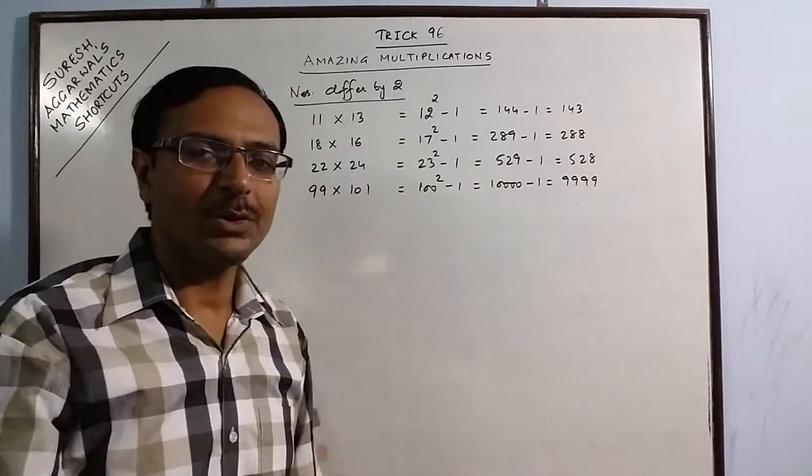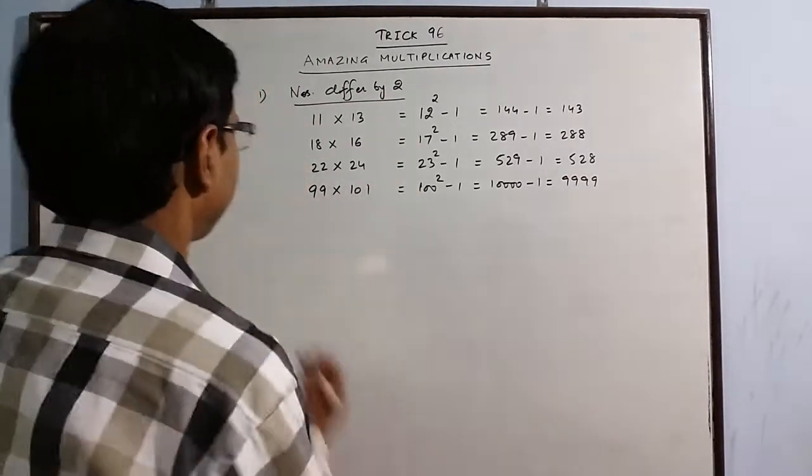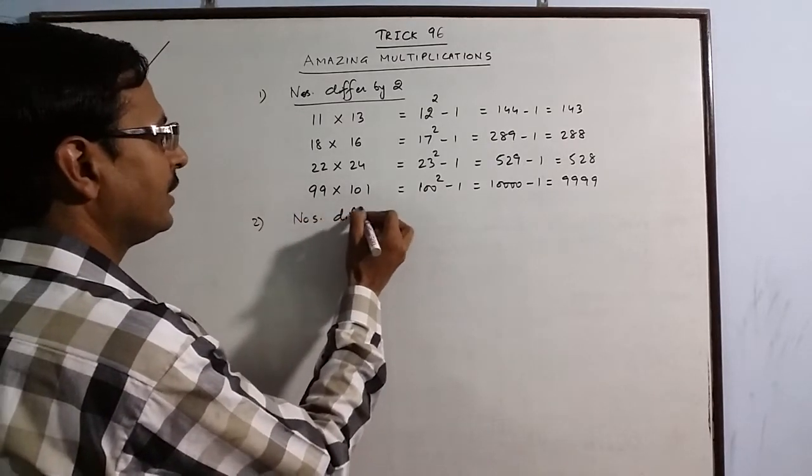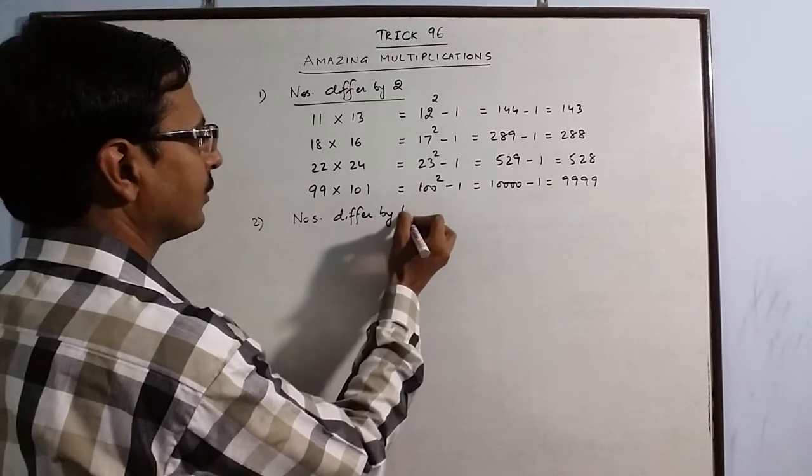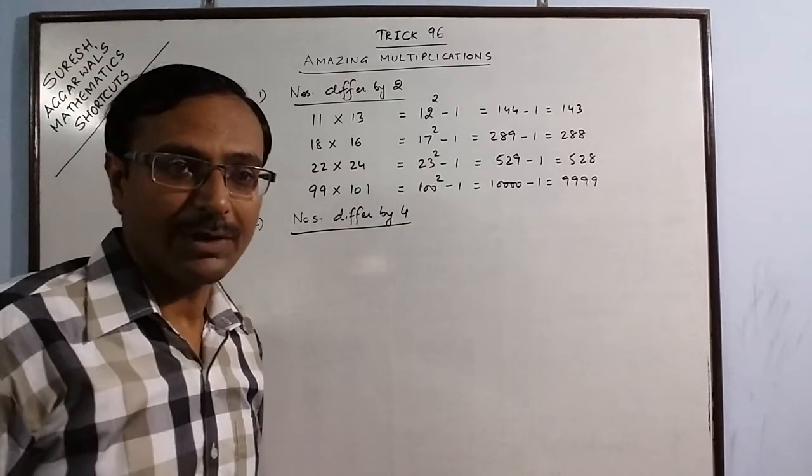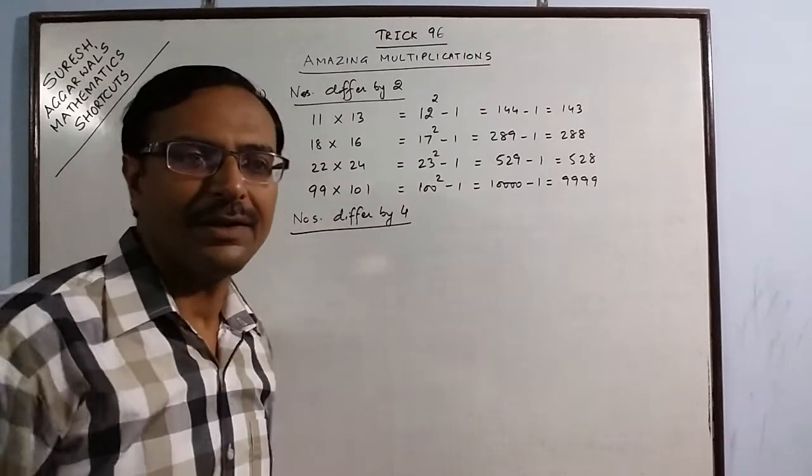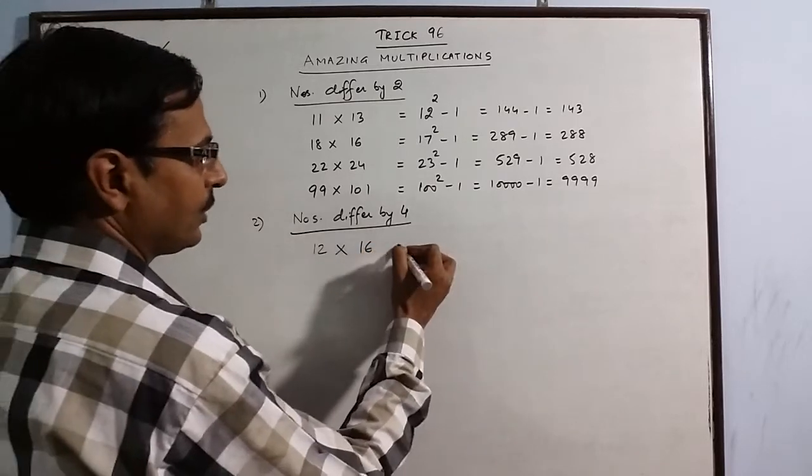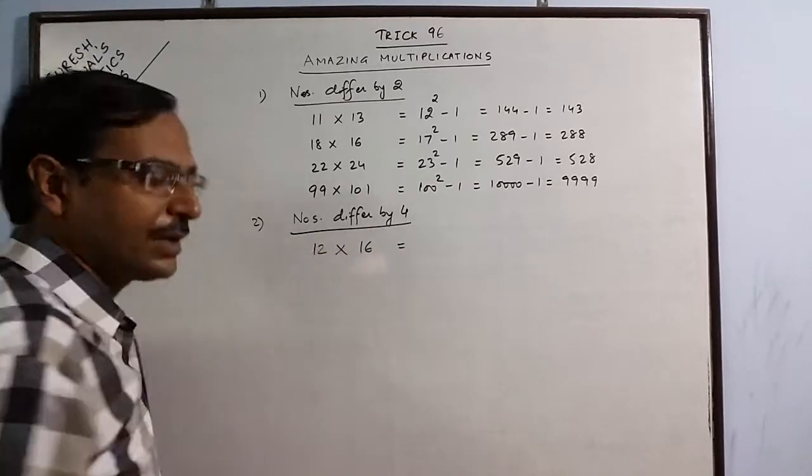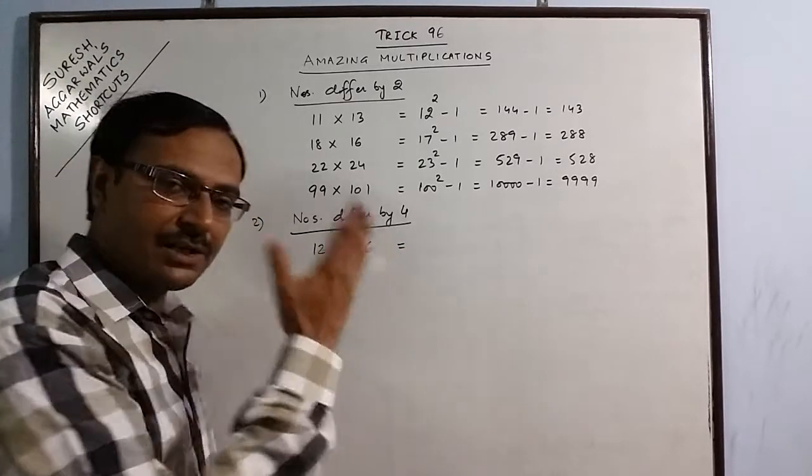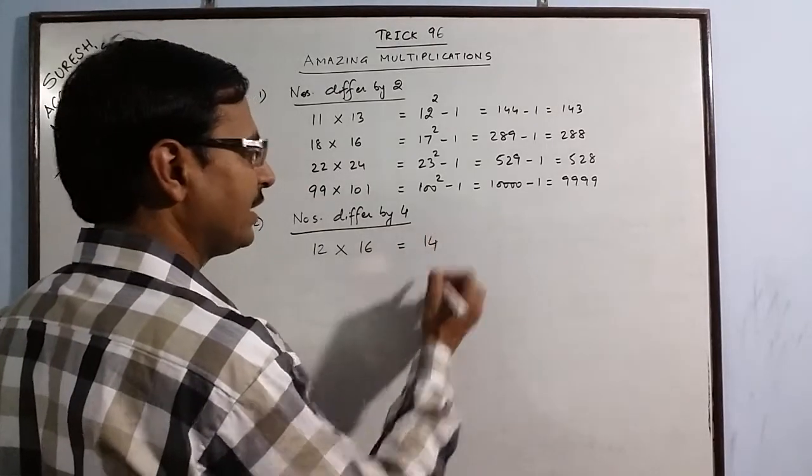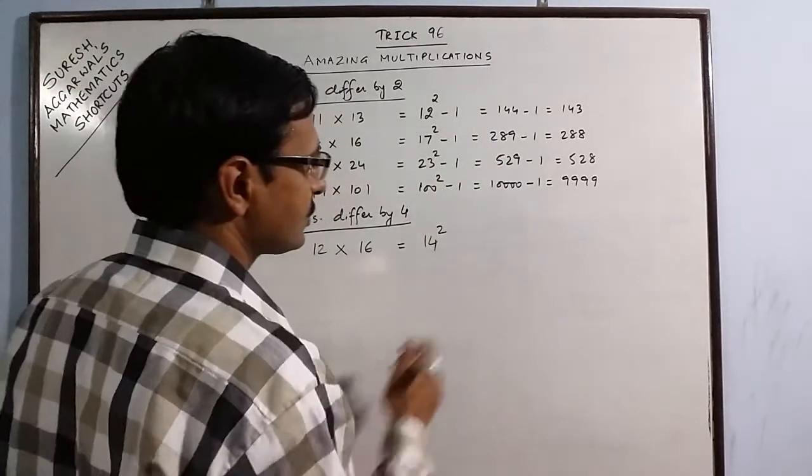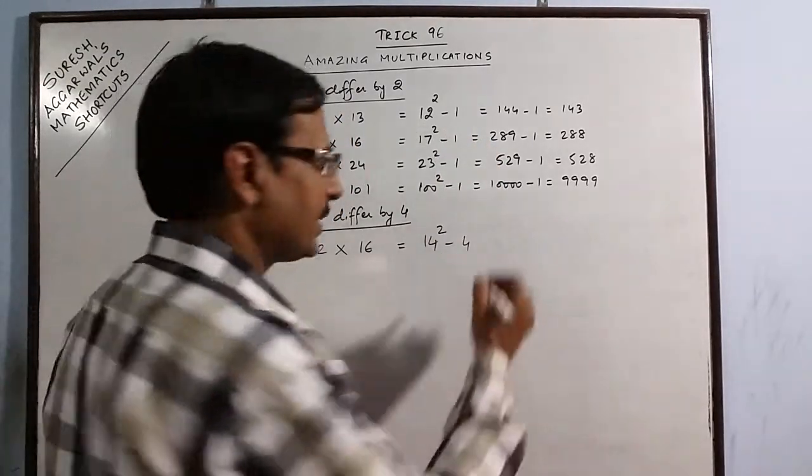If the numbers differ by 2, you just need to know the squares. Now let us change this. Now the numbers differ by 4. Whenever the numbers differ by 4, the method is slightly different. Let us have two numbers: say 12 into 16. Now what you do, again check the intermediate number. In between 12 and 16, you have the exact middle of the numbers as 14. Just square them, and now in place of 1, you subtract 4.